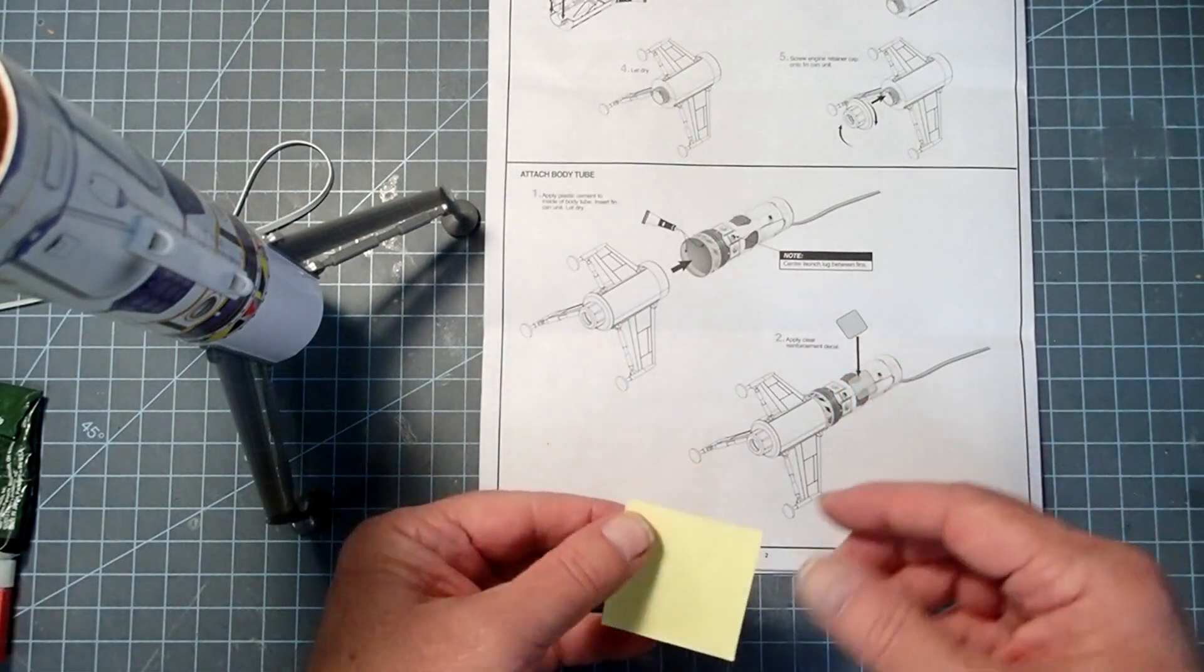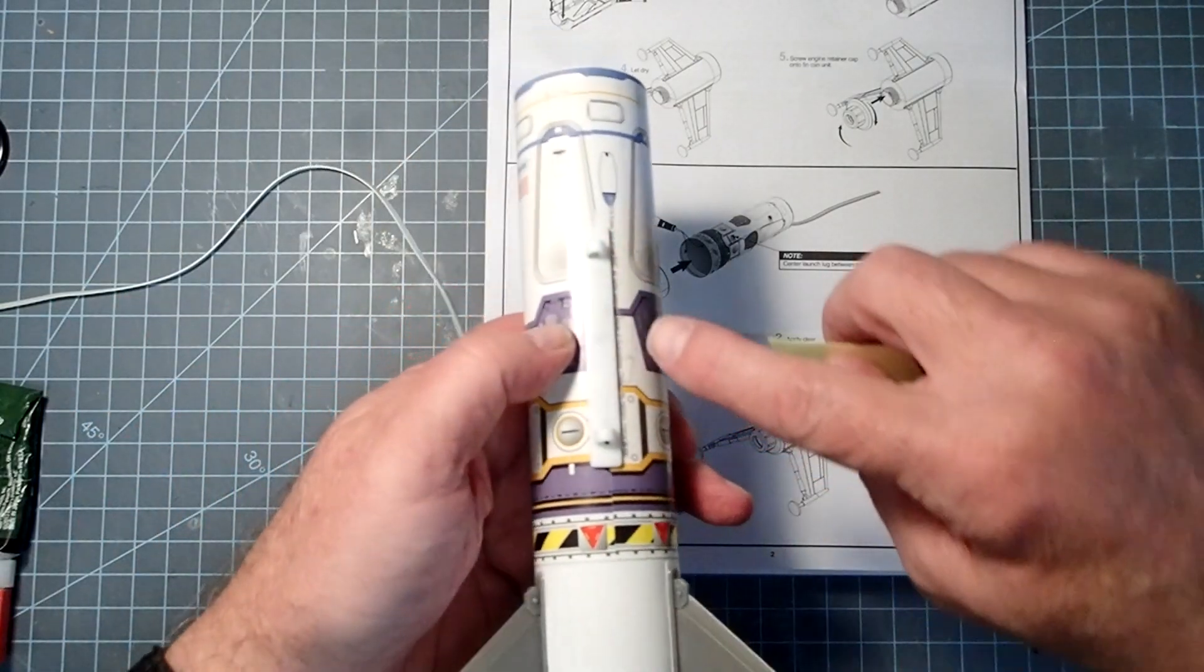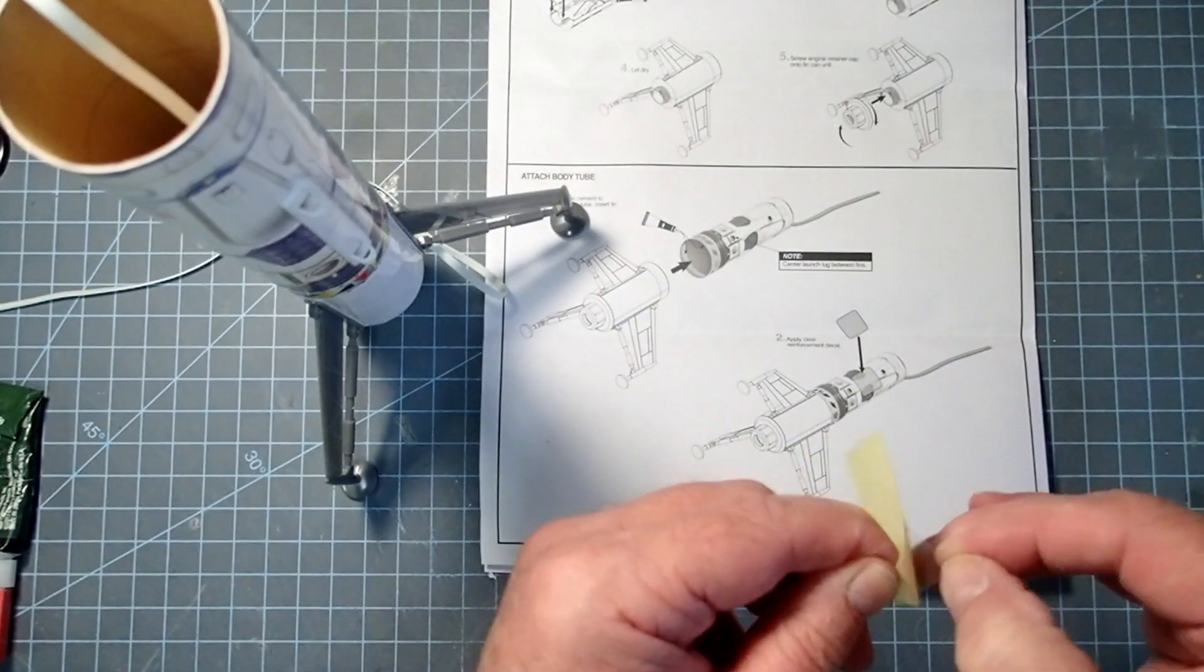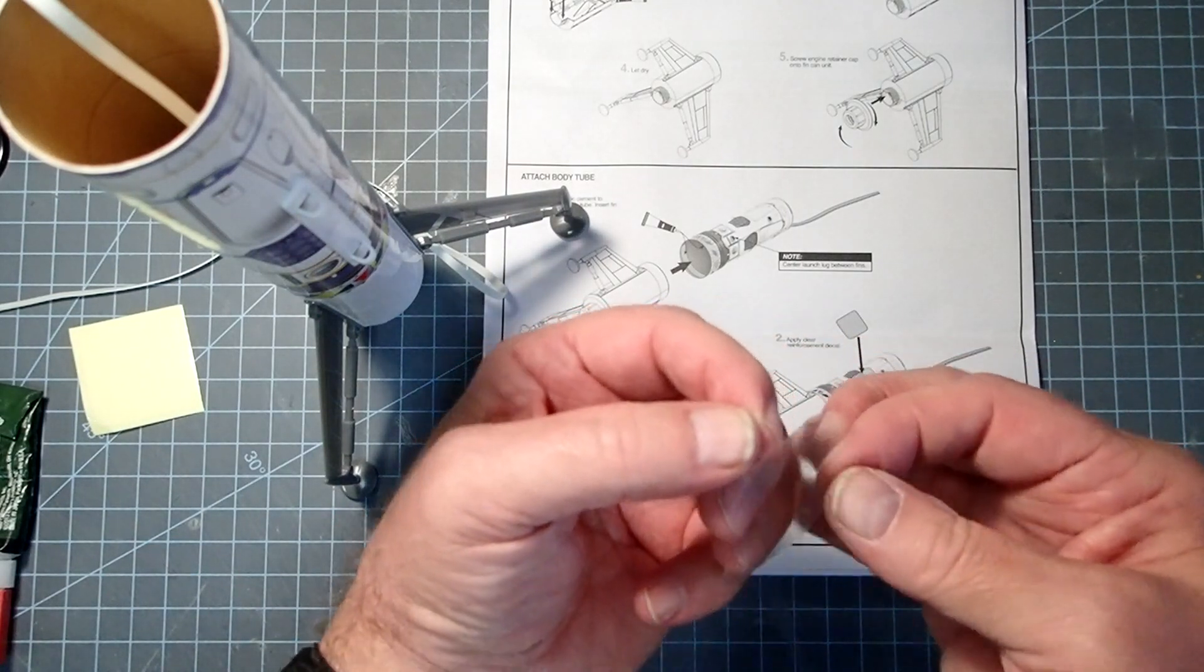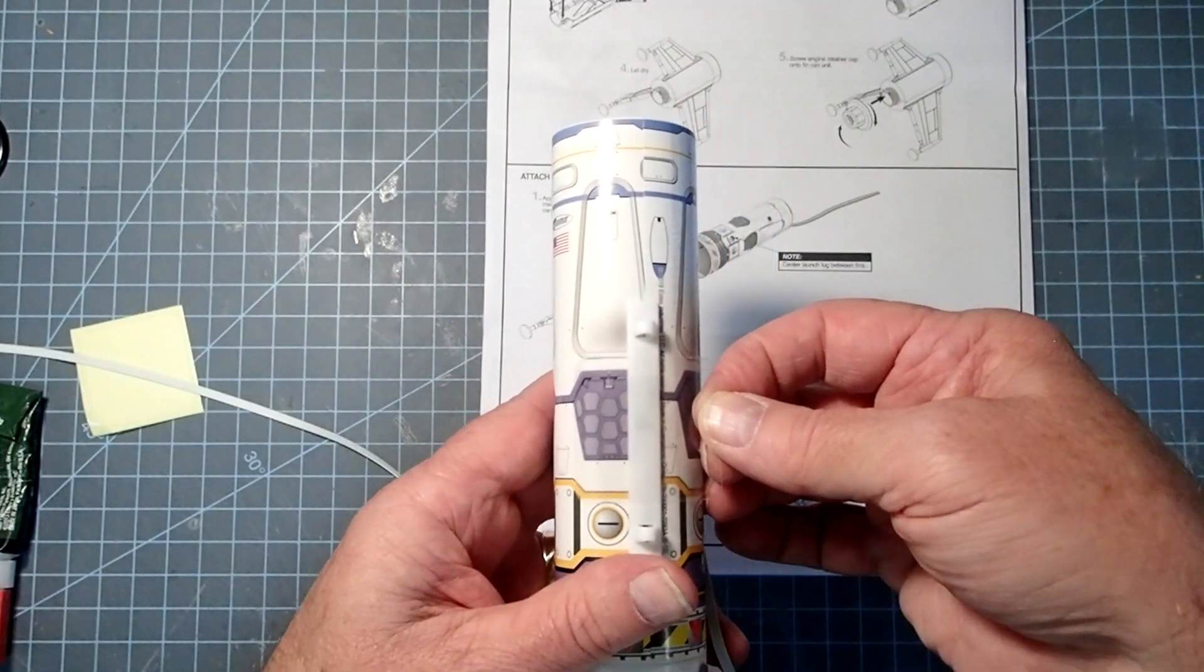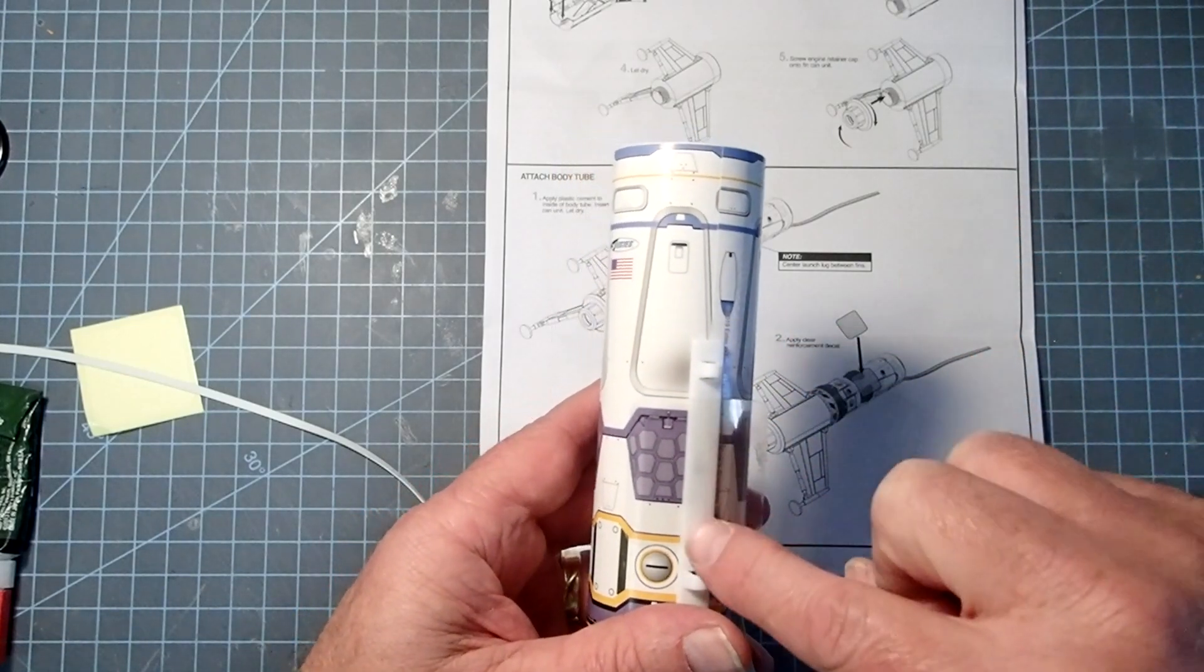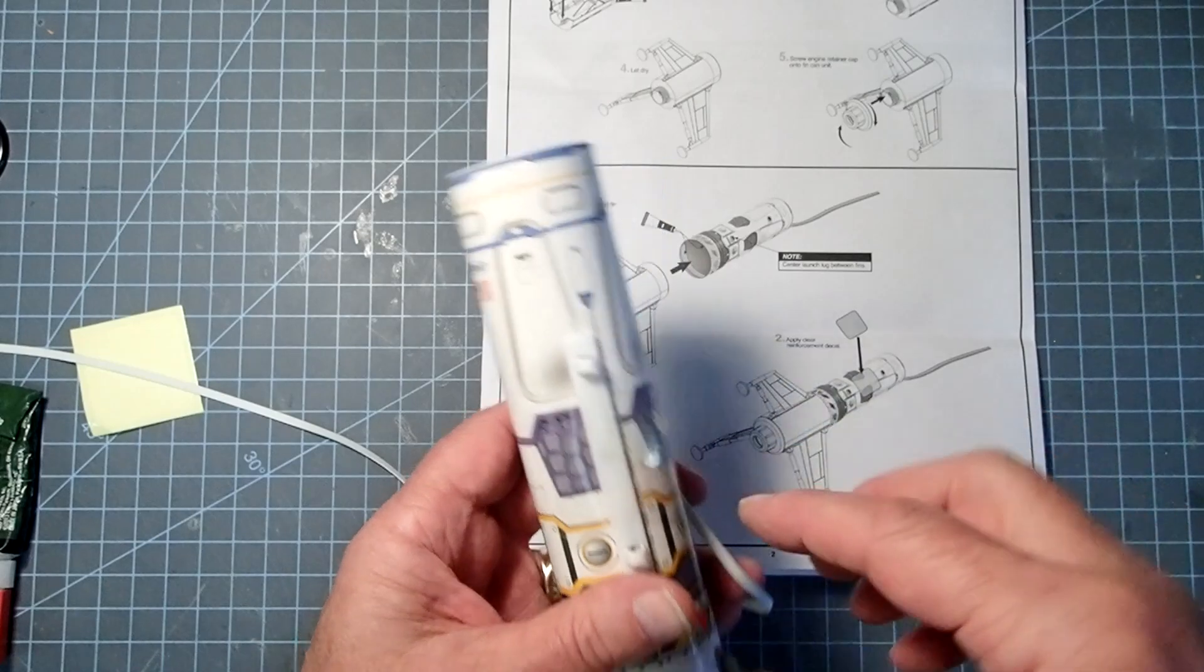Okay, now next, this is where we use this little square sticker. This is going to go right here on the launch lug. And the trick to this is don't let it stick all at once. Handle it by the edges. And the first thing I want to do is just kind of center this on the launch lug without touching it to the body tube yet. Now once I've got that where I want, I'm going to settle it down onto the launch lug.